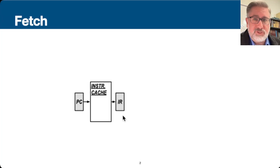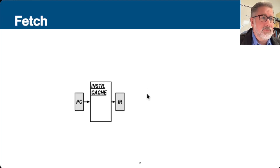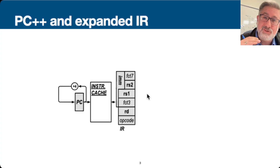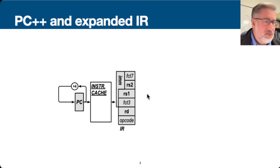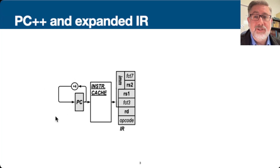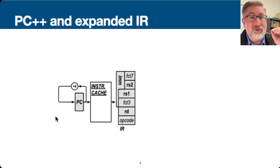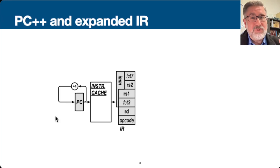That's our first stage, but we also need to be able to update the program counter, because we can't just be pointing at the same instruction. We're going to add four to the program counter cycle by cycle, because there are four bytes in a word, and instructions in RISC-V are 32 bits or four bytes long — so we add four to get to the next instruction.